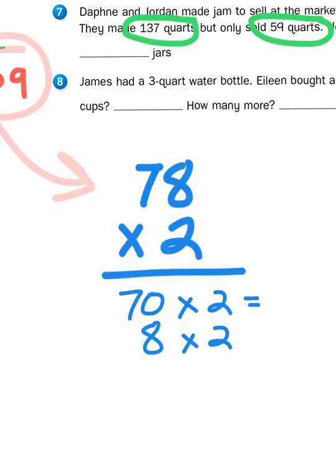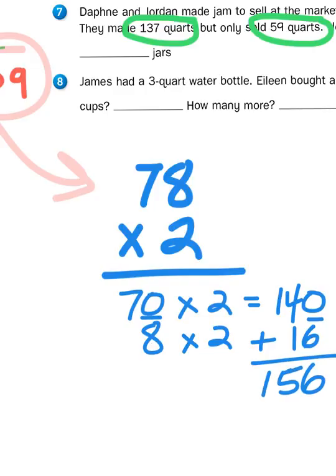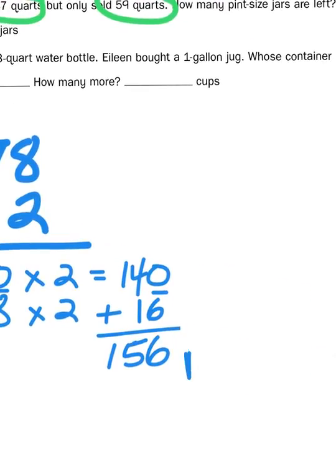Well, 7 times 2 is 14, so 7 tens times 2 is going to give me 14 tens, otherwise known as 140, and 8 times 2, of course, is 16. So I'm going to add those two together, and that gives me 156, and that's 156 pints.